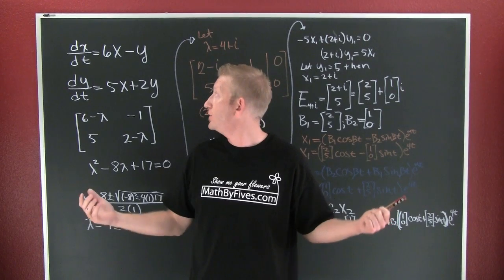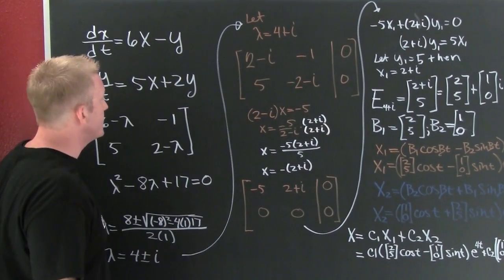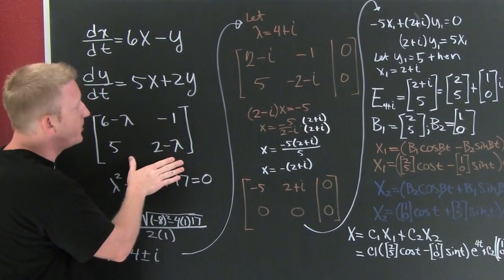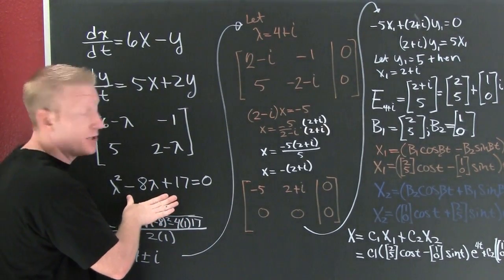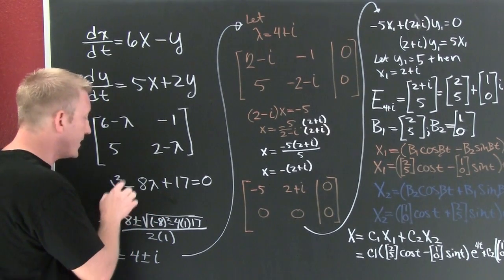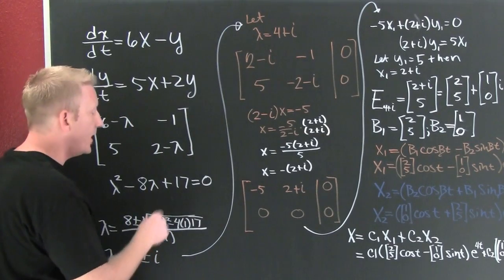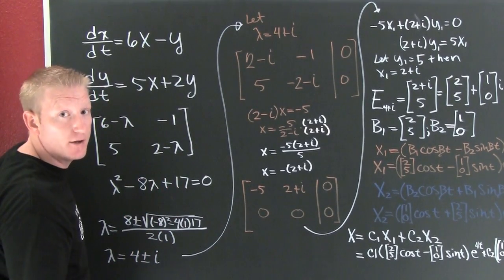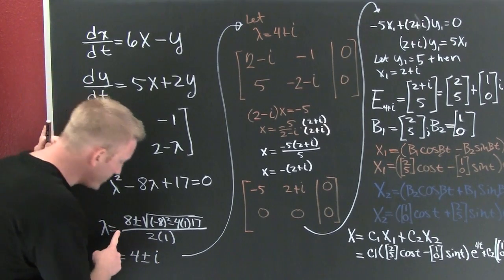Let's solve one of these. I'm up here with this system — seems pretty real. I transform it into its characteristic matrix, take the determinant, and find my characteristic equation is going to be lambda squared minus 8 lambda plus 17. I look for factors of 17 that add to 8, find that there aren't any, so then I go quadratic on it.